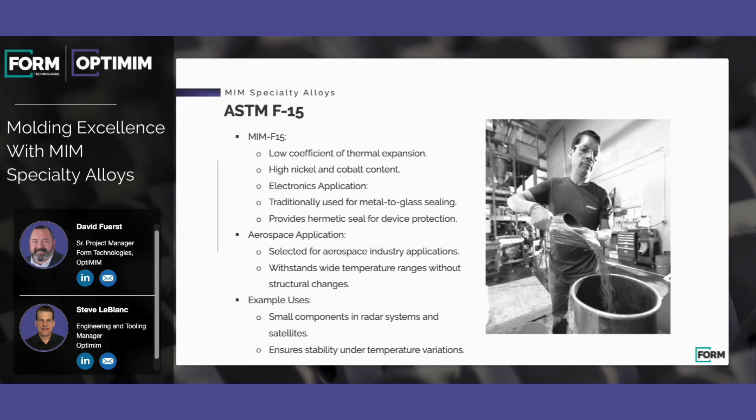I want to talk about some details of a particular specialty alloy: ASTM F15. This is a high nickel and cobalt alloy. It has a low coefficient of thermal expansion. It's often used in electronics applications and, in general, for hermetic sealing enclosures of metal to glass. It's often used in aerospace applications.